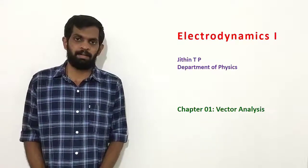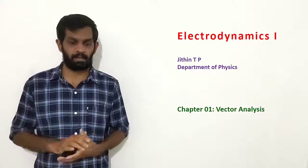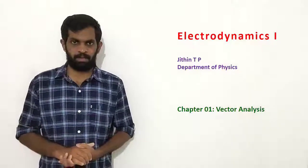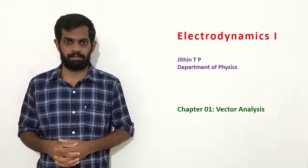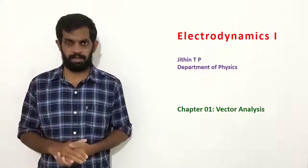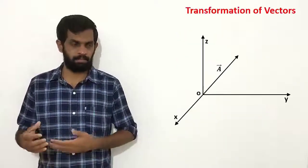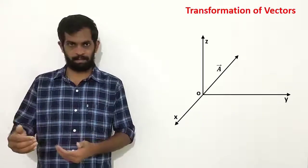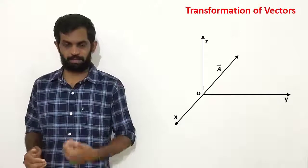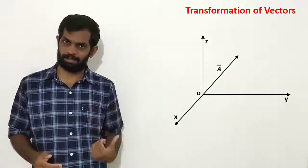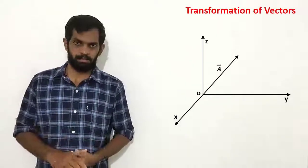Hi all. Today we are going to discuss how a vector transforms when a coordinate is rotated. In the last few lectures, we discussed the component form of a vector and position vectors. We know how to represent a vector in component form — vector A can be represented as ax·i plus ay·j plus az·k, where ax is the projection of A on the x-axis, ay is the projection on the y-axis, and az is the projection on the z-axis.